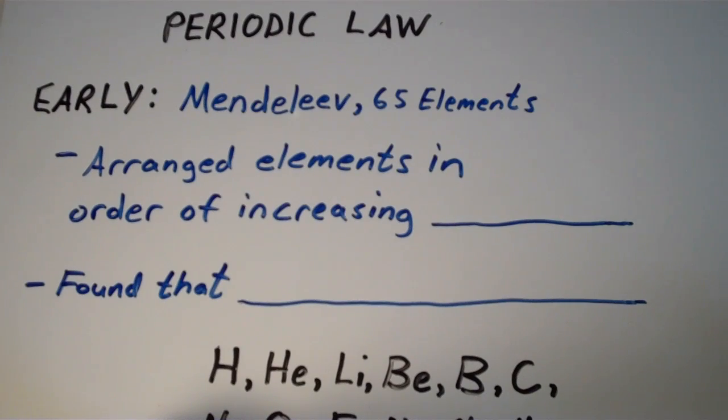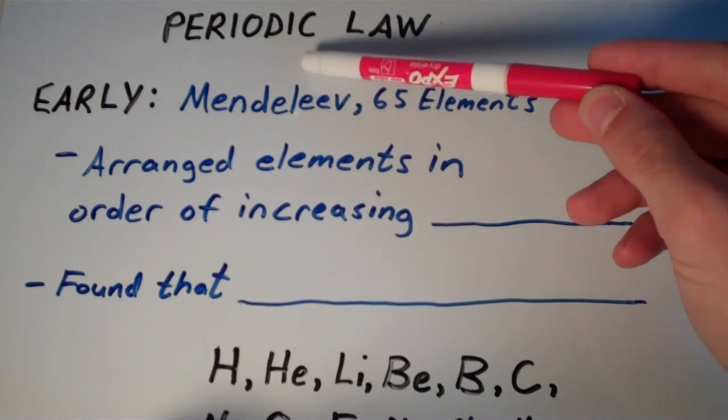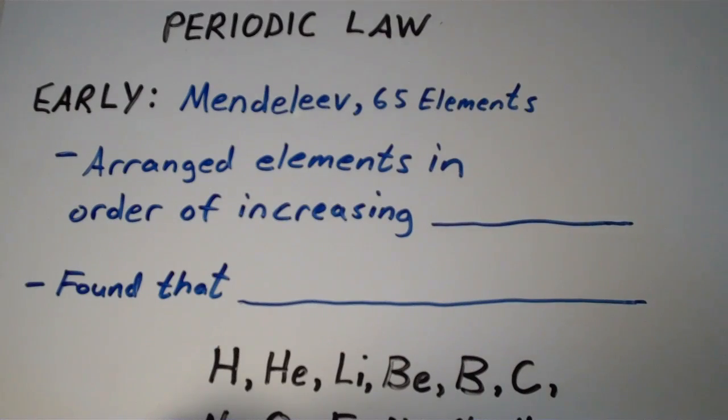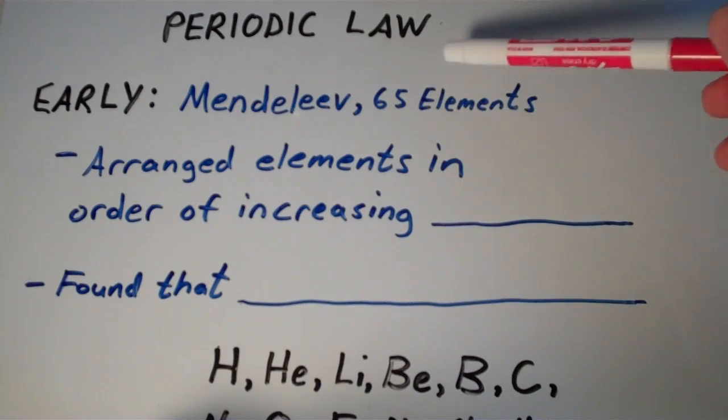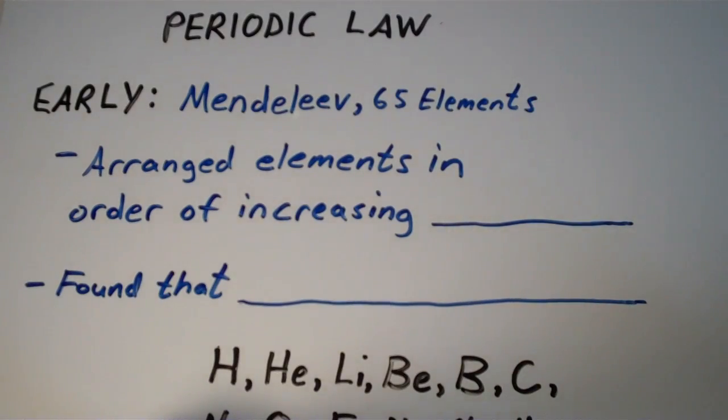A good starting point for the discussion of periodic law is with the early periodic table proposed by Russian chemistry professor Dmitry Mendeleev. In Mendeleev's time, there were 65 known elements. Not many of the elements known today were known back then, but the properties of many of these elements were known.